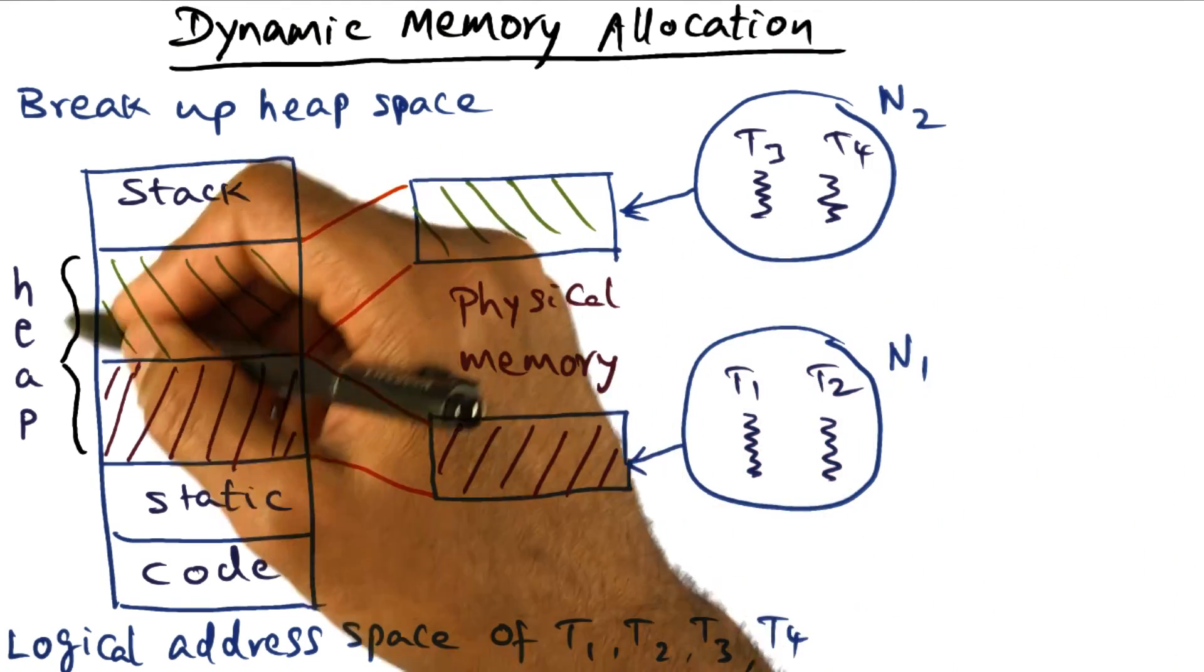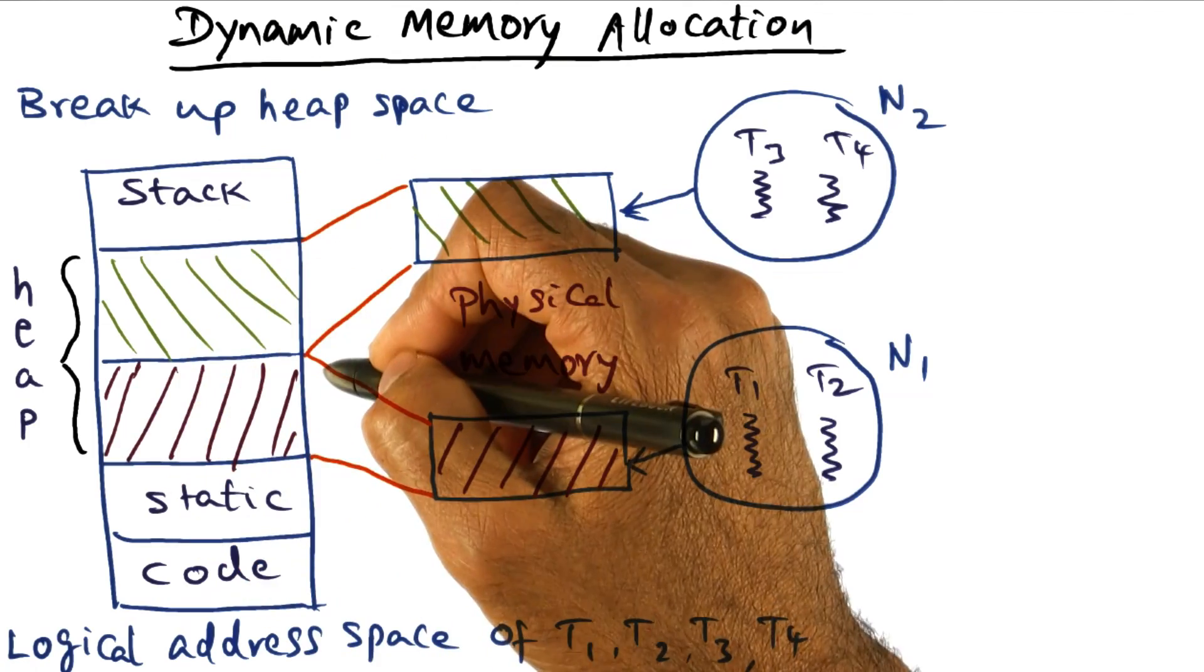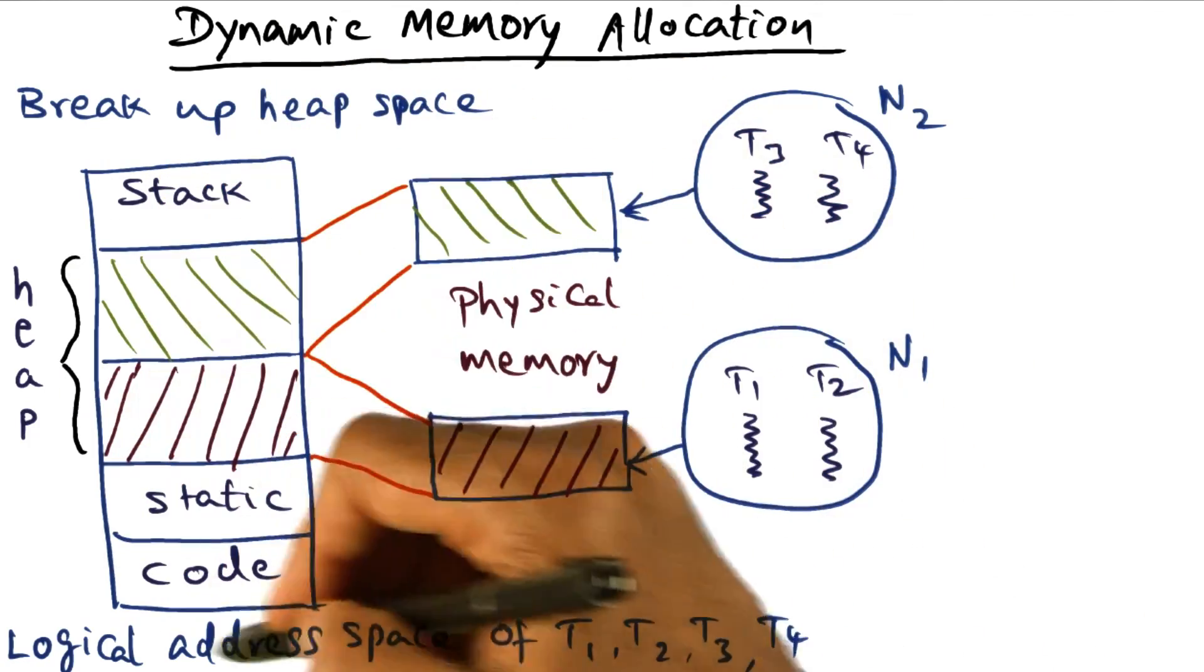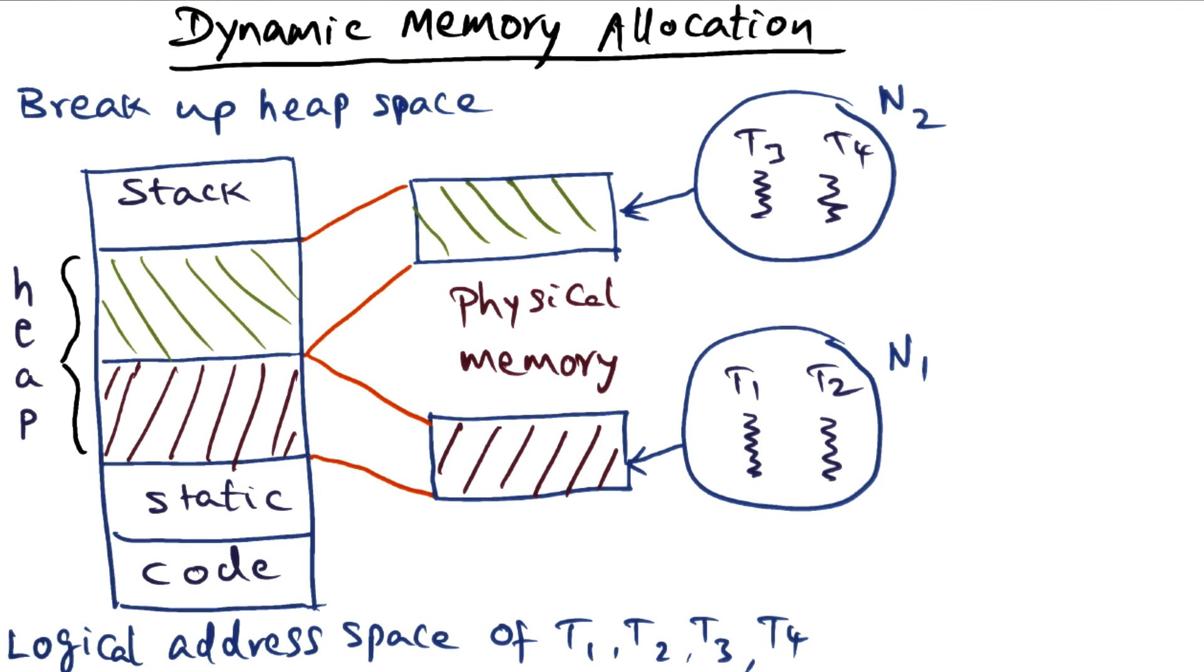And in order to do that, one possibility is to take the heap space of the process and break it up. So this is a logical address space of a multi-threaded application. And in the logical address space,